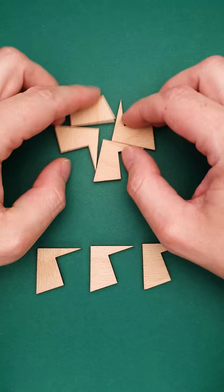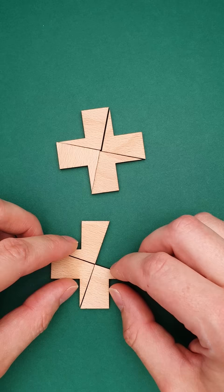As you can see, I can easily build one cross using four parts, but then there is not enough parts to build the second one.